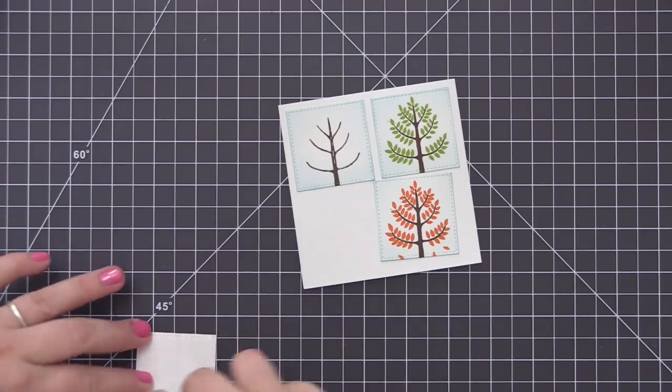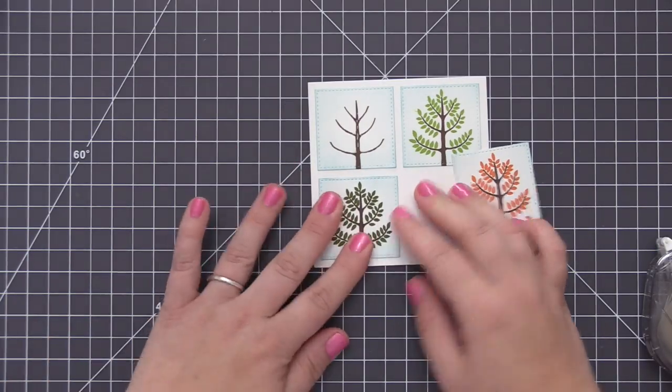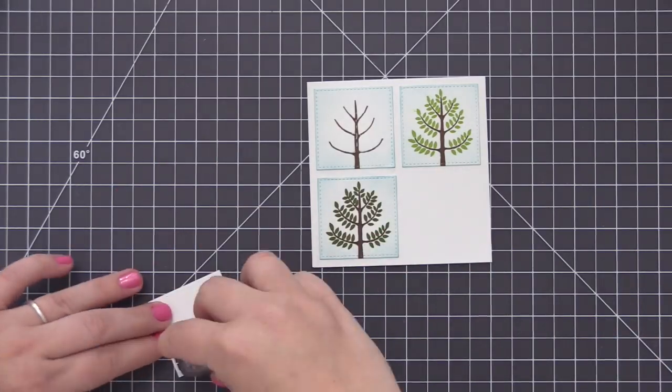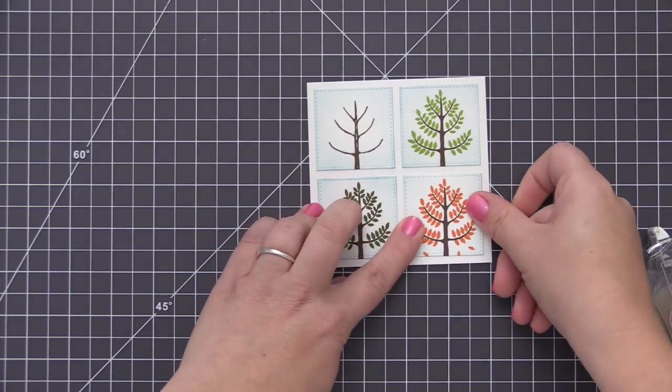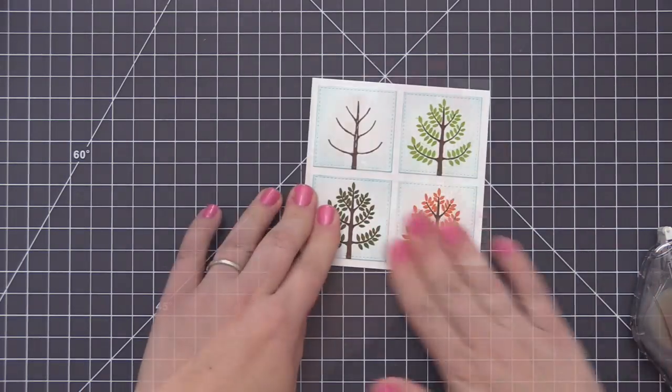If you want to add a little bit of dimension to your card you can definitely adhere all of these with some foam adhesive behind them, but I decided to keep mine completely flat and just adhere them directly to the card. Then once I have them all on there I'm going to take the whole entire panel and adhere it to a card base.